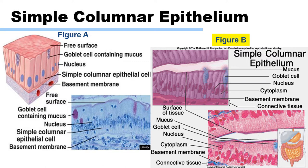Simple columnar epithelial tissue, similar to cuboidal, can have protection, secretion, absorption, and excretion functions. This epithelium often has apical specializations such as microvilli or cilia, which enhance its absorptive function. Simple columnar epithelium can be found in the walls of the stomach, intestines, and gallbladder.